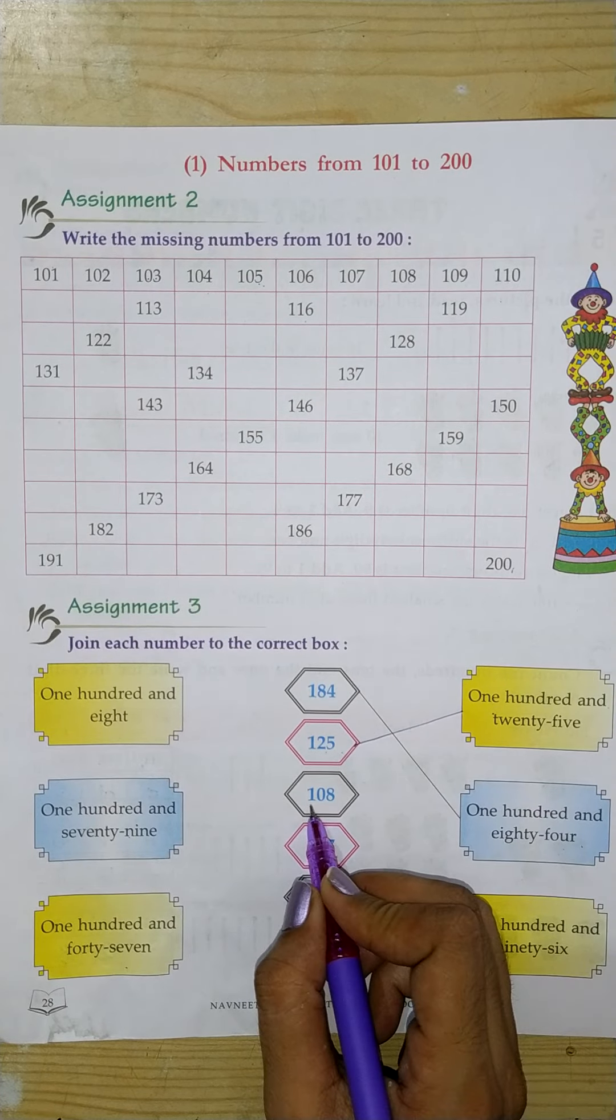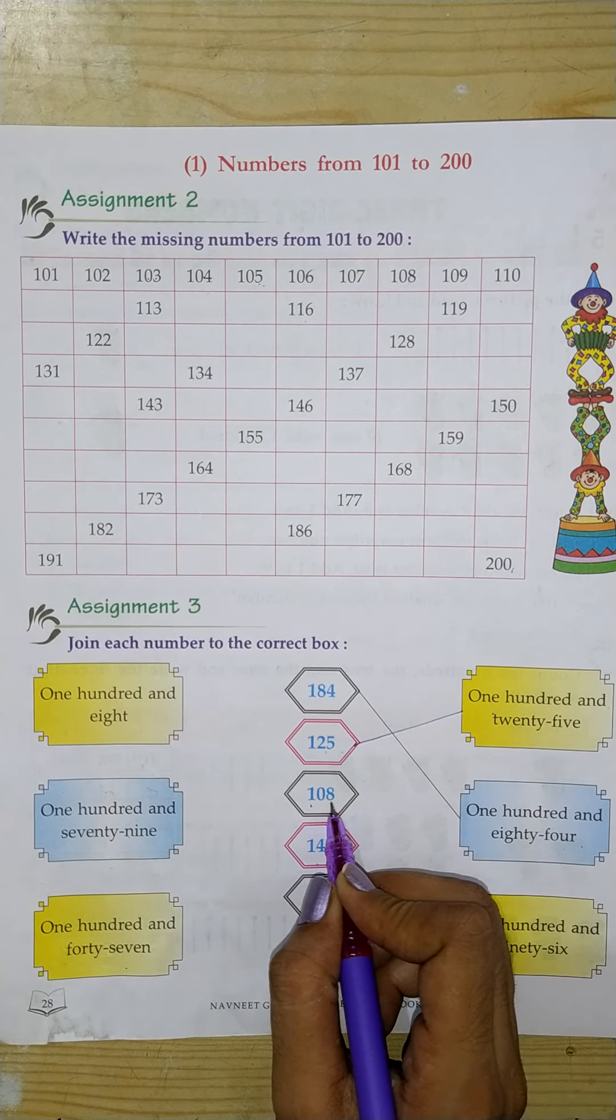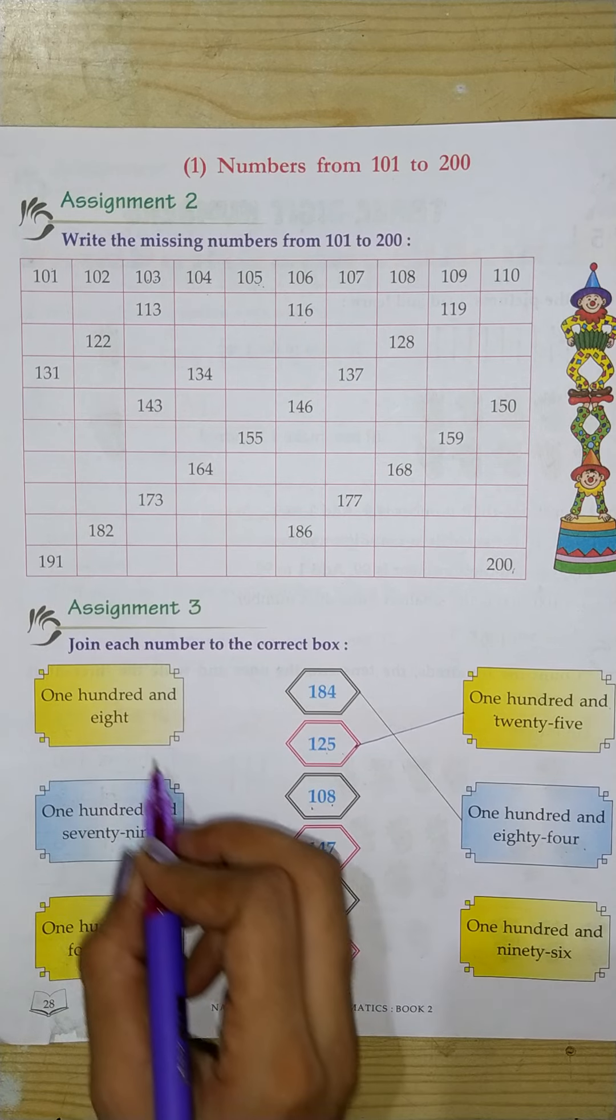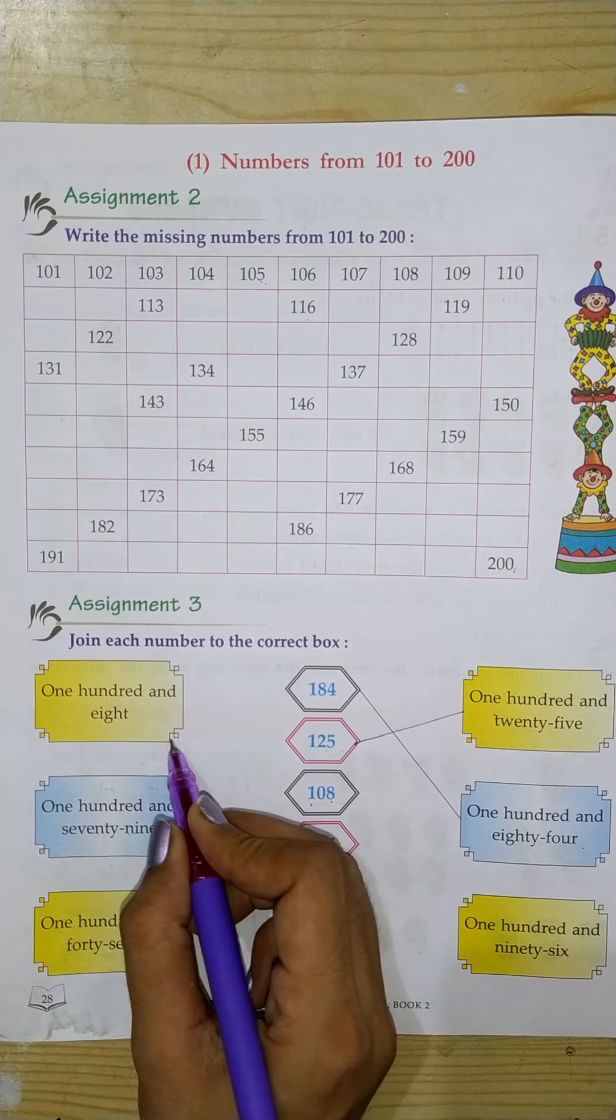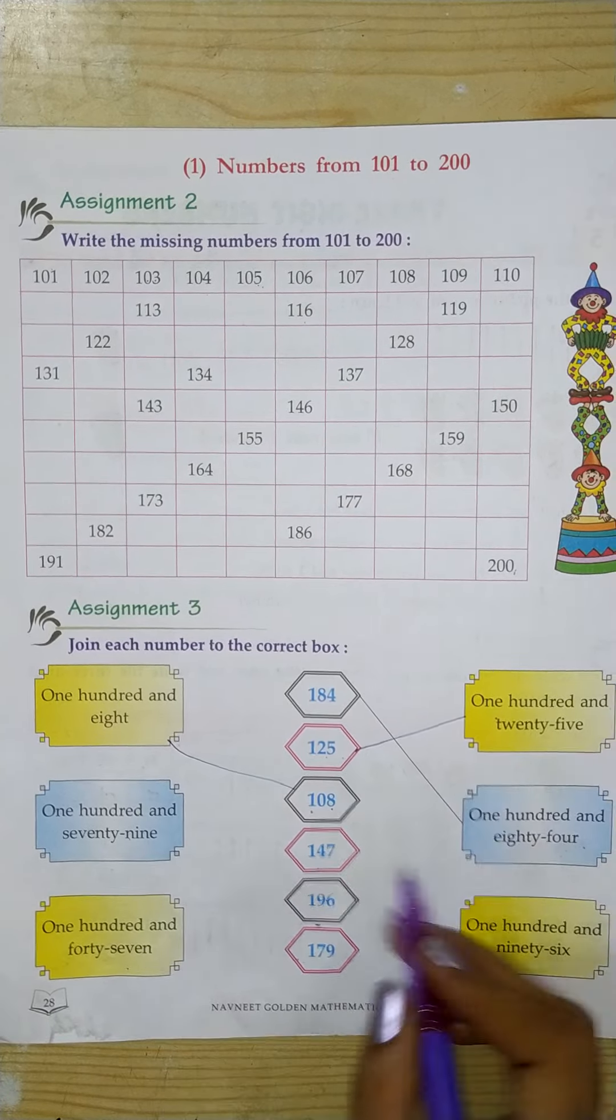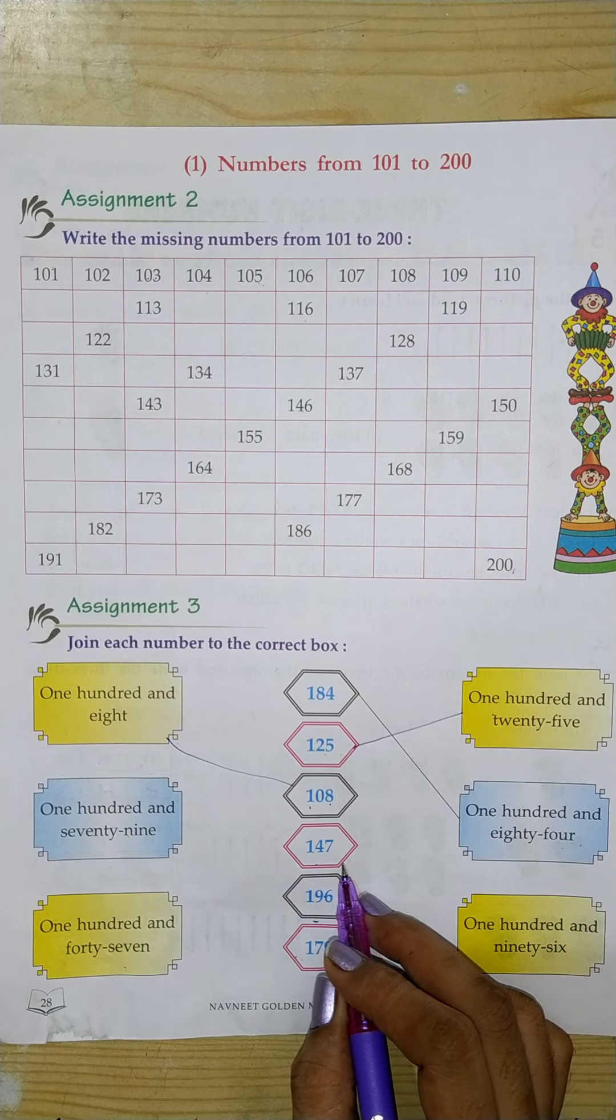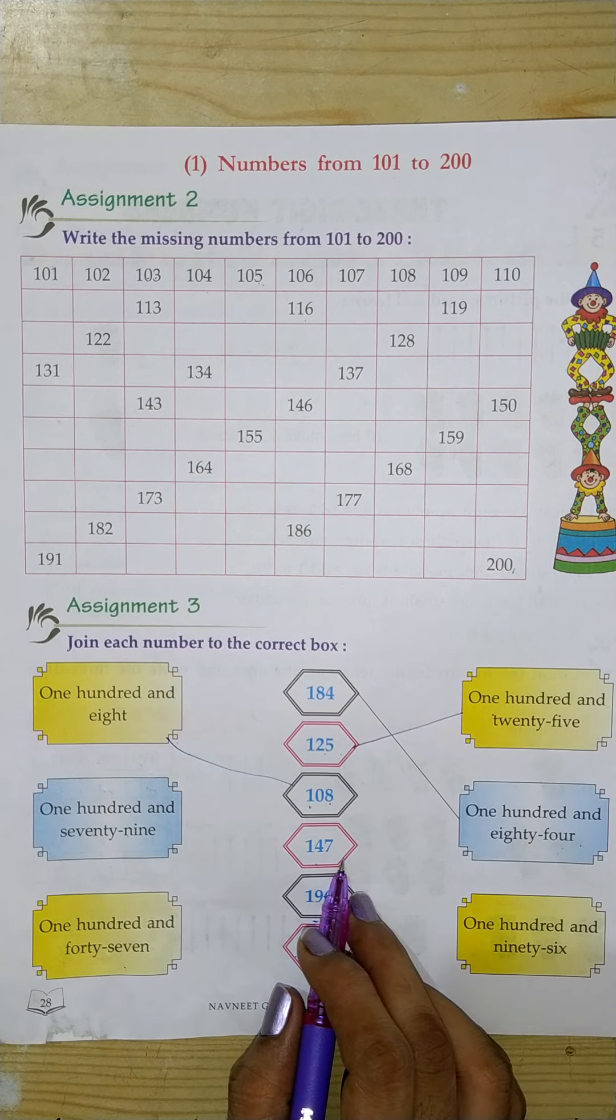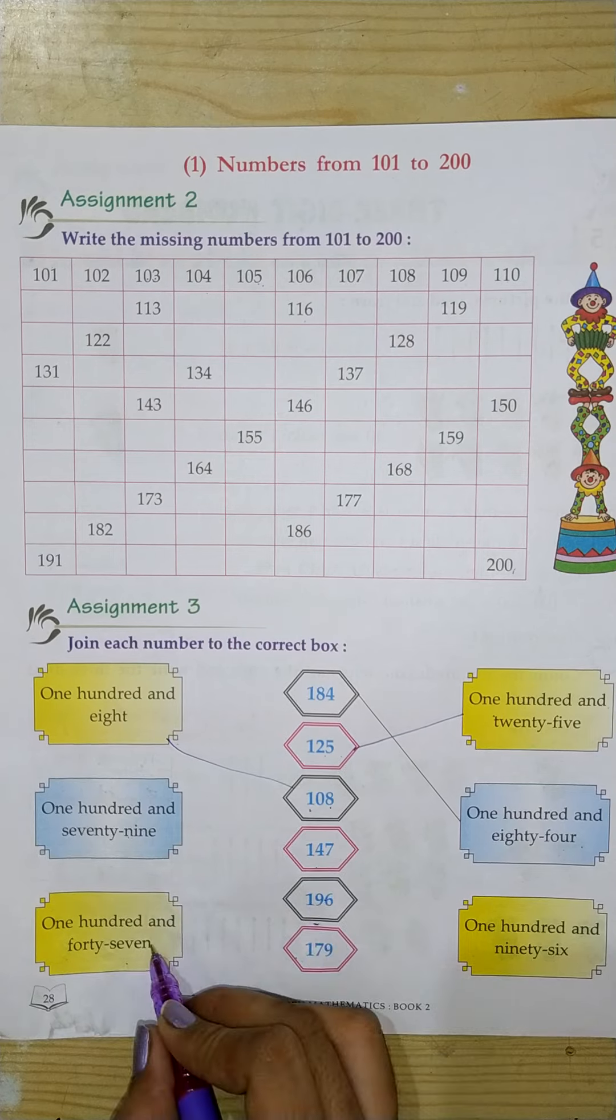Okay, I will do it. Third, 108. Next, 147. How is 147? Here, see.